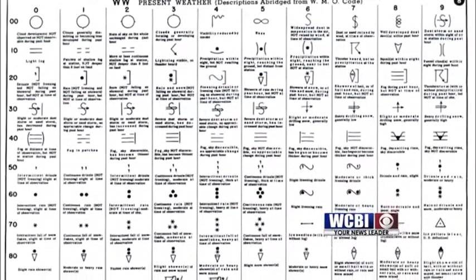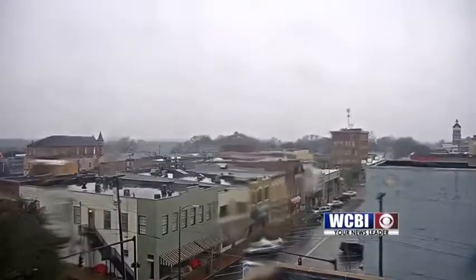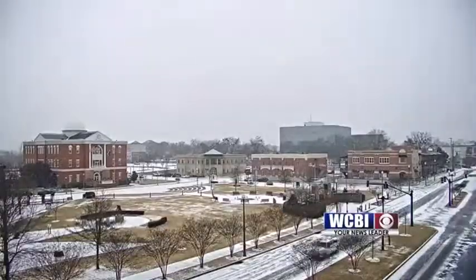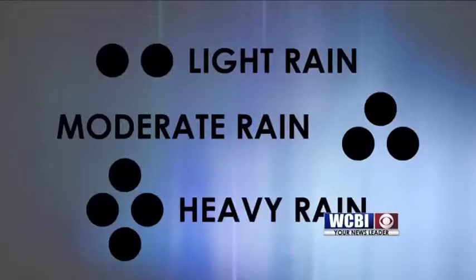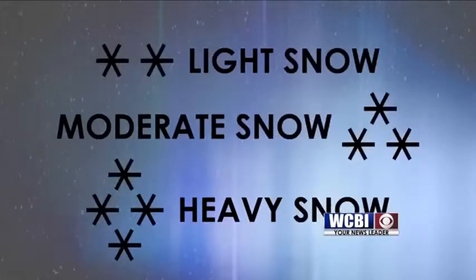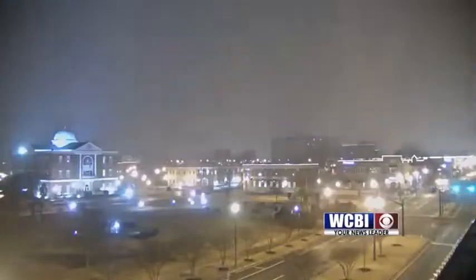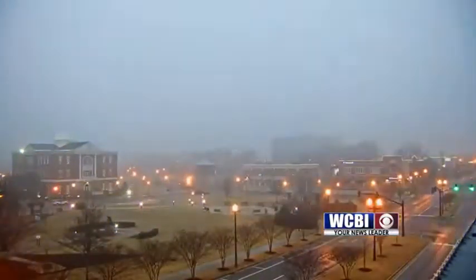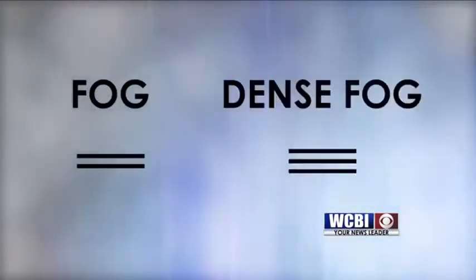Now that we have those covered, what are some other common weather symbols? Well, both rain and snow have a three-tiered system that indicate light, moderate, or heavy precipitation. For rain, the symbols are circles, but for snow, they are small snowflakes. There is one other commonly used symbol — fog. It consists of two parallel lines, but a third may be added for very dense fog.